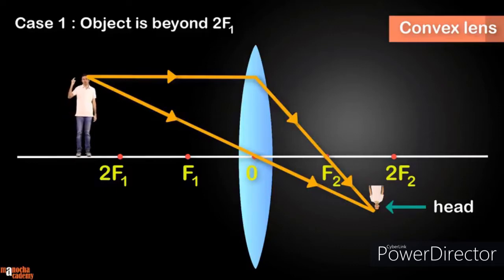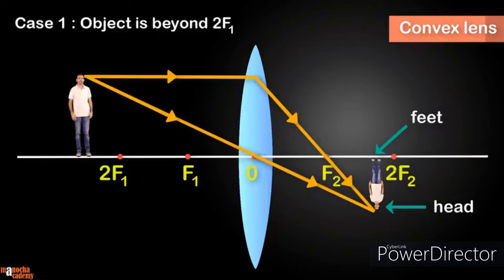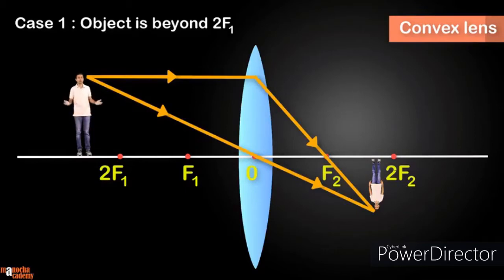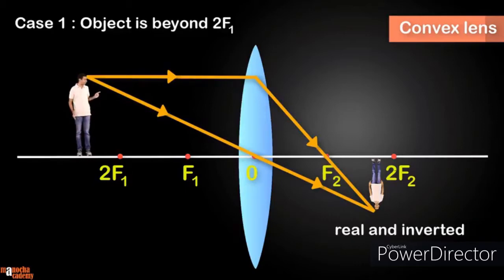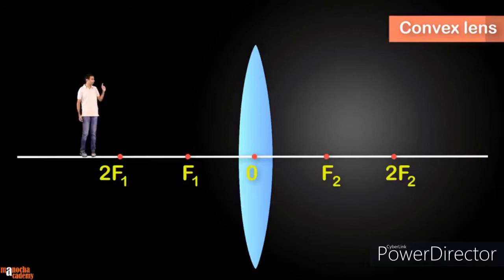The intersection of the two rays gives us the image of the top of the object. The feet of the image lie on the principal axis, so you don't need to draw light rays for the bottom — simply extend the top of the image down to the principal axis. For case one, the image is real and inverted, it's diminished, and the image is formed between f2 and 2f2.